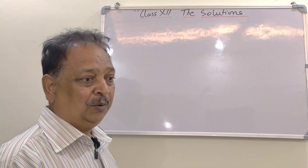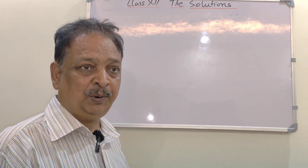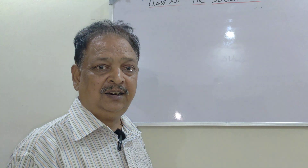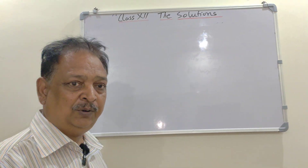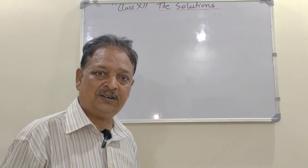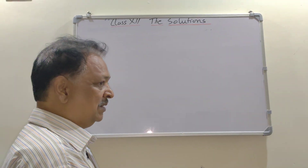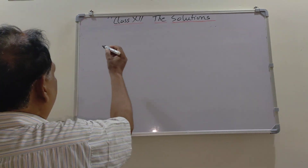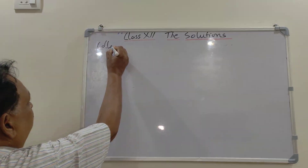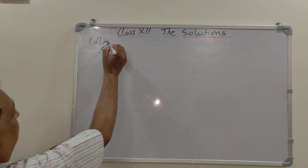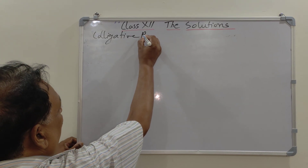Today I am going to tell you about colligative properties. The first colligative property we are going to discuss is relative lowering of vapor pressure.